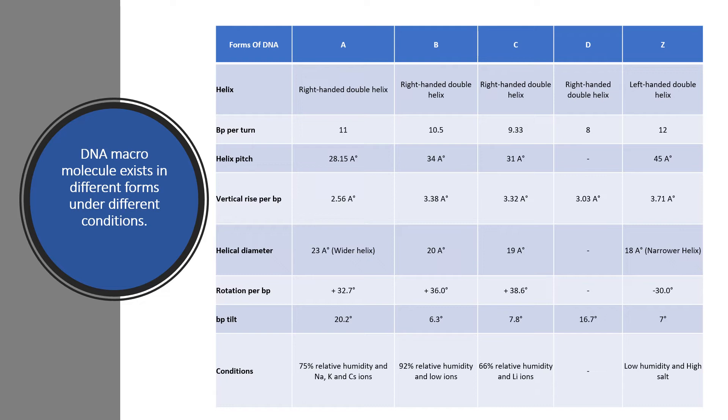Helical diameter in A form is 23 angstrom. It means it has the widest helix, and Z form has the narrowest helix with 18 angstrom diameter.